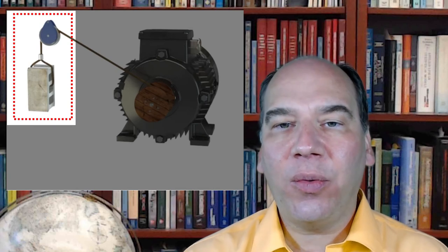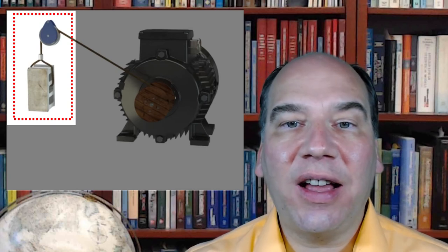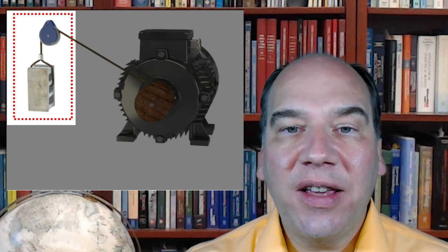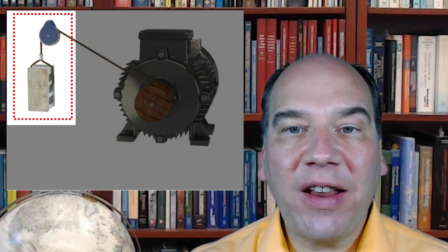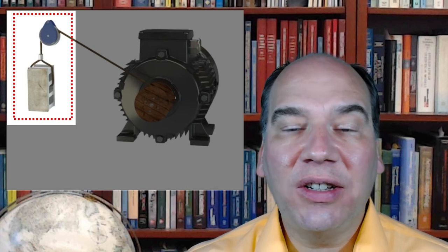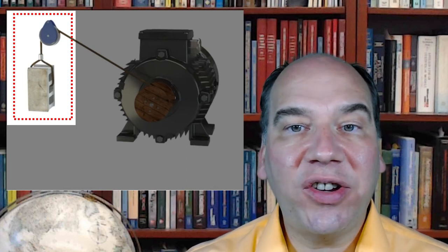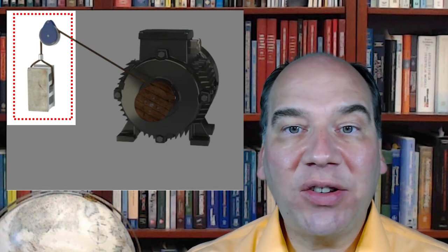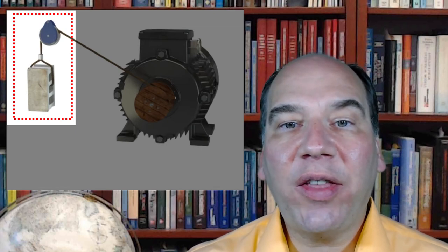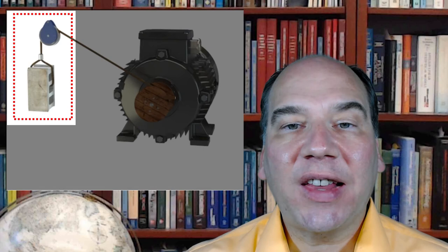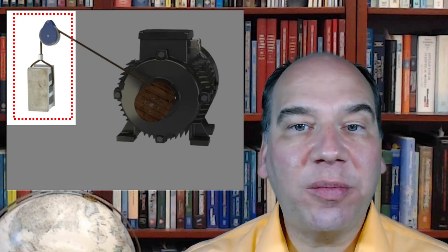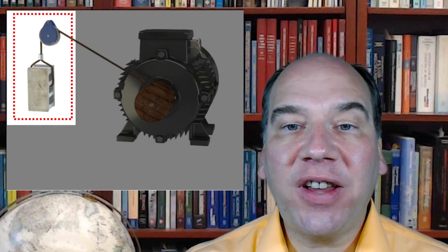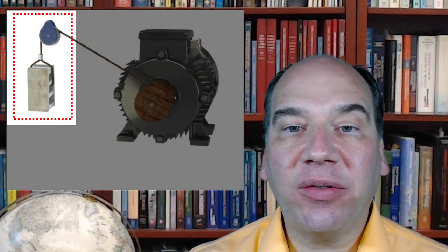So the pulley is inside the box but didn't contribute anything to the story. The change in the system energy is all tied up in the gravitational potential energy of the weight — still 100 joules of work interaction between system and surroundings. The pulley didn't change at all: same kinetic energy, same gravitational potential energy, same internal energy. The block's gravitational potential energy increased by 100 joules.